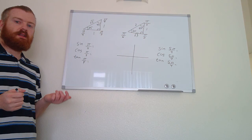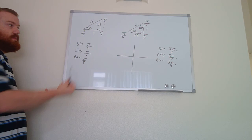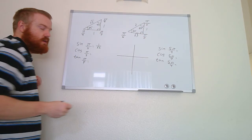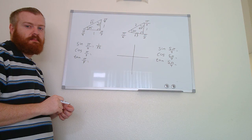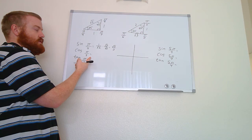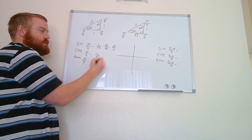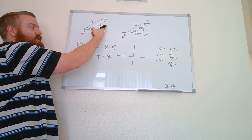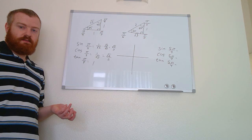Now let's evaluate sine, cosine, and tangent of π/4 using the 45-45-90 triangle. Sine(π/4) = opposite/hypotenuse = 1/√2; rationalizing by multiplying top and bottom by √2 gives √2/2. Cosine(π/4) = adjacent/hypotenuse = 1/√2 = √2/2. Tangent(π/4) = opposite/adjacent = 1/1 = 1.